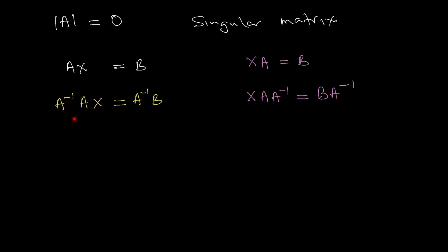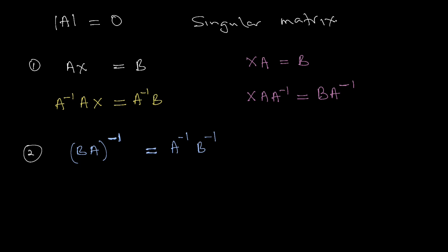The inverse of a must be placed next to a, so for ax=b you put inverse of a to the left of a and to the left of b. For xa=b, you put inverse of a to the right of a and to the right of b. Also, the product of BA to the power minus one expands to a inverse times b inverse, so (BA)⁻¹ equals a inverse times b inverse. The determinant of any matrix being inverted must not be zero.